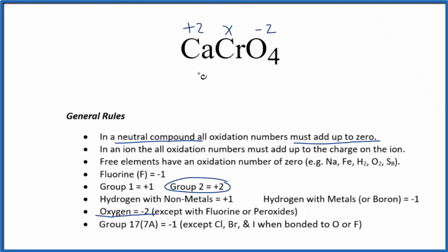If that gets confusing, you could set up an equation: +2 + x + (-2 times 4), all adding up to zero. When you do the math, you'd have x - 6 = 0, so x = +6, which is what we got before.